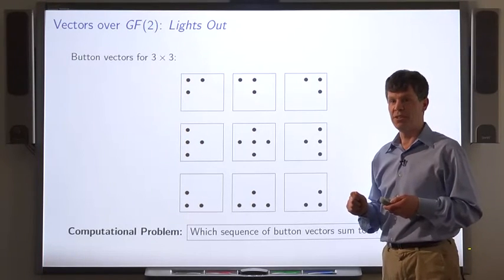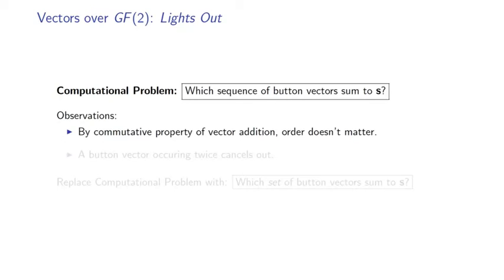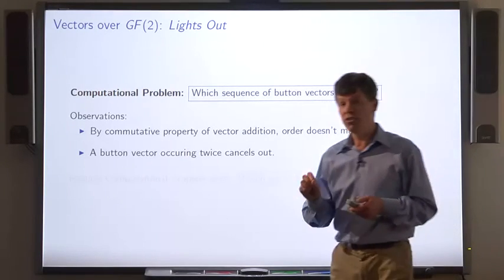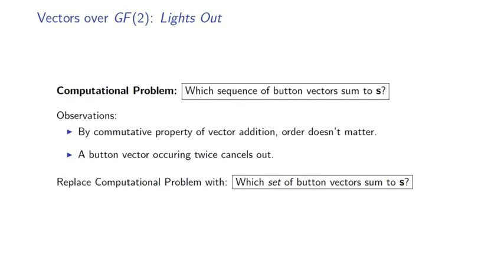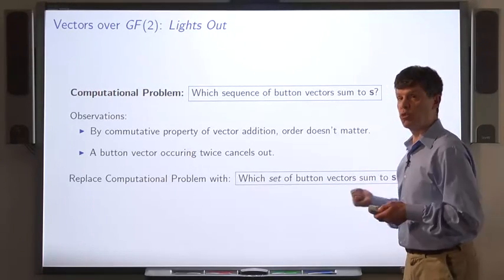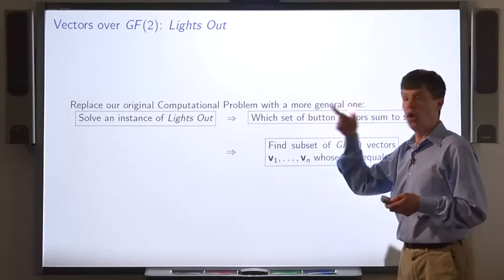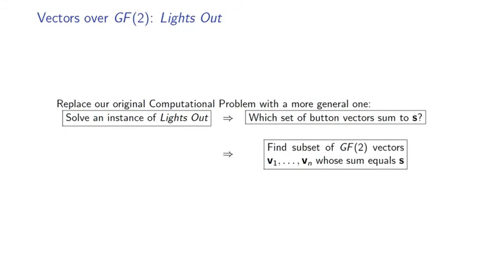The key idea is that when we use vectors over GF2, adding a vector toggles exactly the positions where the vector we're adding has ones. So we can use GF2 vectors to model the process of pushing buttons in Lights Out. Now, which sequence of buttons will lead to the configuration in which all the lights are out? By the commutative property, the order in which you push those buttons doesn't matter. Also, if you add a button vector twice, they cancel out. So all we have to do is figure out which set of button vectors we need to push — that is, which set of button vectors will sum up to the vector representing the initial configuration. This reduces the Lights Out problem to: given a bunch of vectors over GF2, find a subset whose sum equals some target vector s.